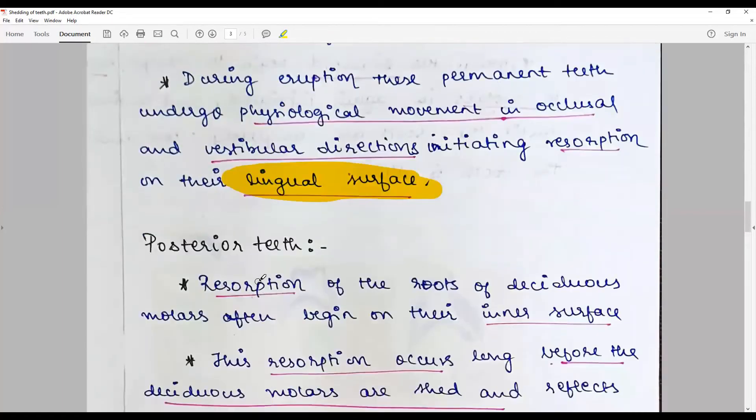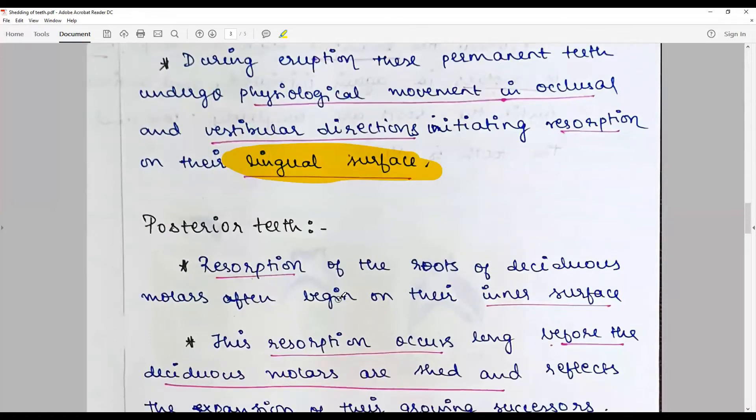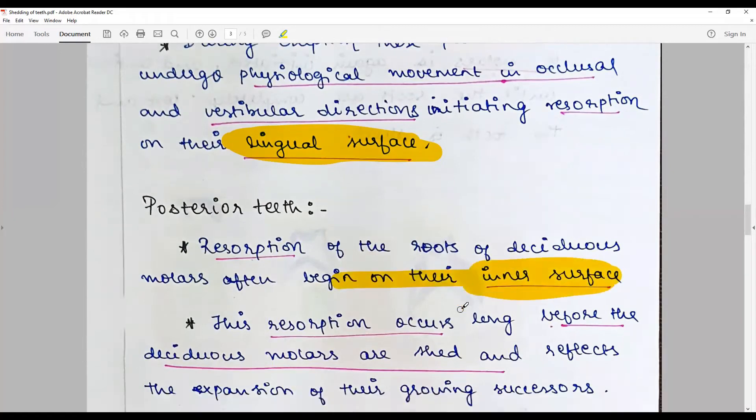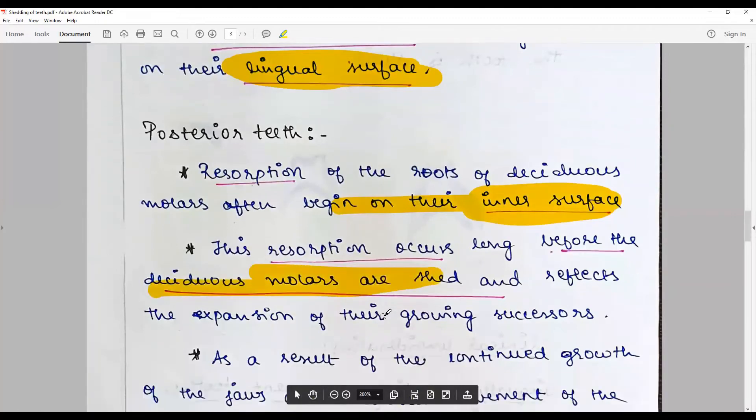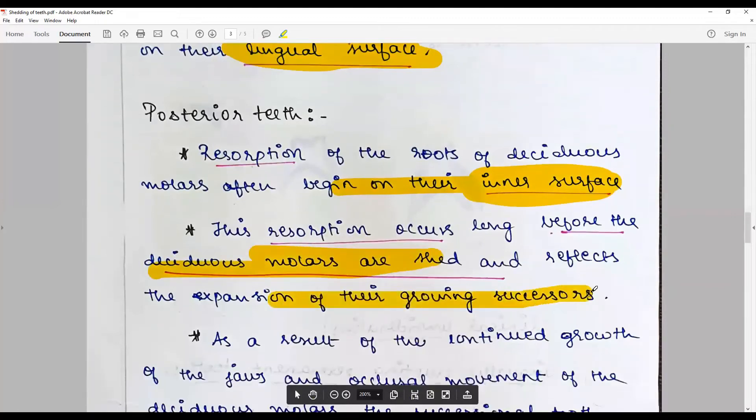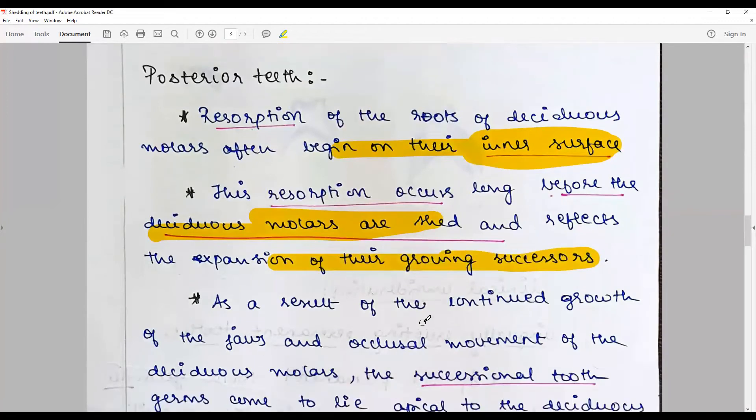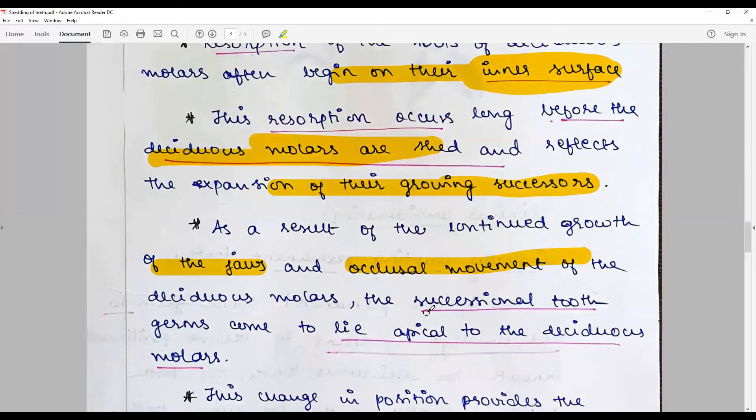For the posterior teeth, the resorption of the roots of the deciduous molars often begins on the inner surface of the inter-radicular area. The resorption occurs long before the deciduous molars are shed and reflects the expansion of their growing successors. As a result of the continued growth of the jaws, the occlusal movement of the deciduous molars and the sectional tooth germs come to lie apical to the deciduous molars.